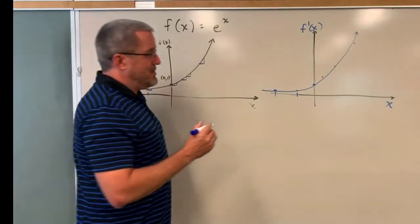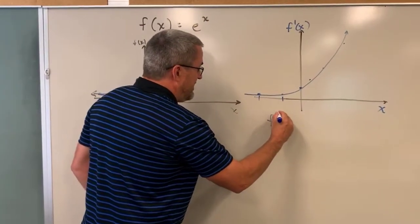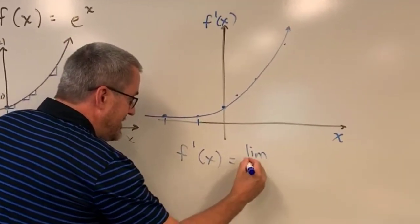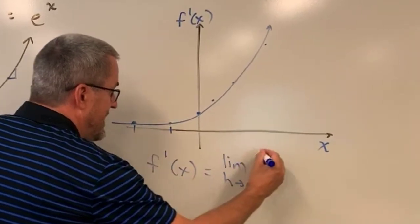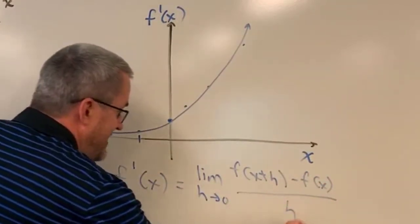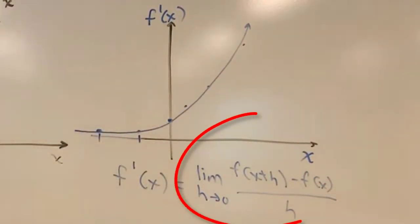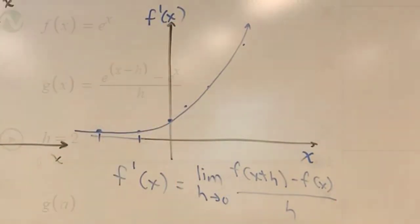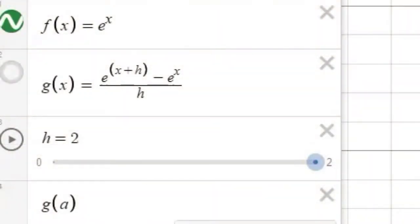So we're going to explore this some more using the definition of derivative. Keep in mind that the definition of derivative is we take the limit as h goes to 0 of f of x plus h minus f of x, all divided by h. We're going to explore that definition of derivative and see if this graph we're sketching out makes sense. You've seen some evidence that perhaps the derivative of the function e to the x is e to the x. But I want you to explore this a little bit more using Desmos.